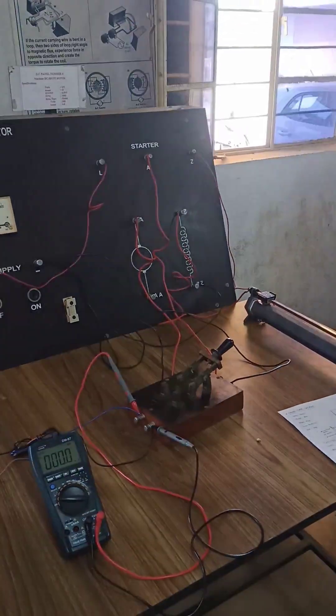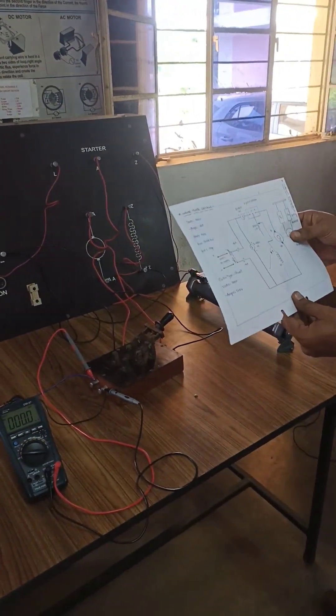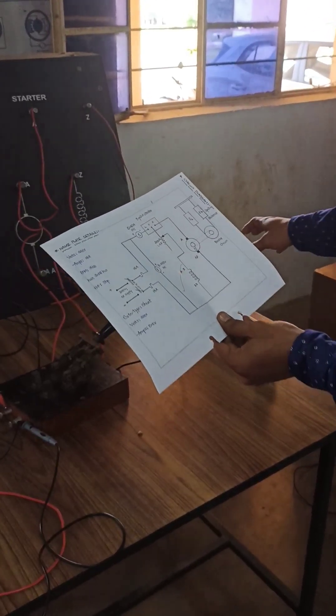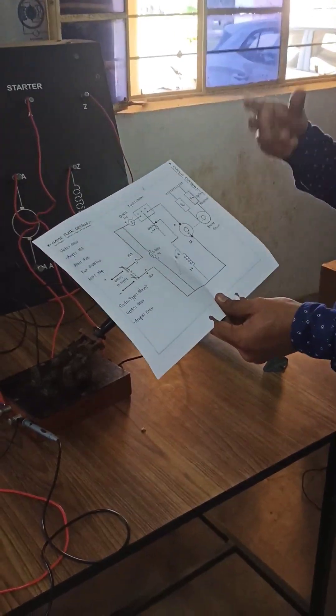We are having a voltmeter, ammeter connected to the field rheostat and we are keeping the field rheostat in minimum resistance position.